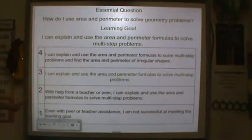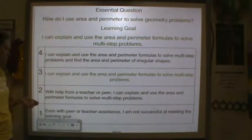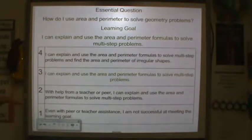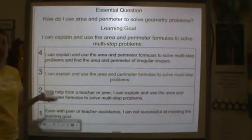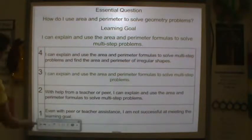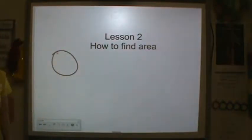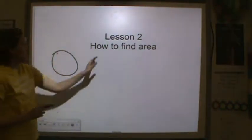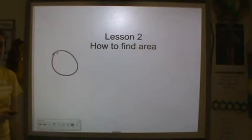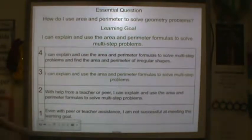Level two, you need help with a peer or the teacher. You're probably still hovering around here, which is perfectly fine. And level one, even with peer or teacher assistance, I'm not successful meeting the learning goal. Some of us may also be at a level one. That's okay, we're only at lesson two. So before you get started, what I'd like you to do is rate yourself a four, three, two, or one, and give yourself a circle around your rating for lesson two right by the title so I know where you were at the beginning of the lesson. Go ahead and rate yourself now and put it next to lesson two.